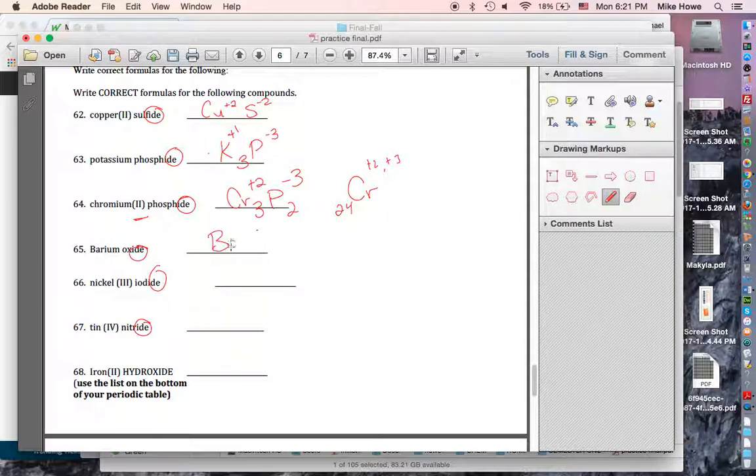Barium oxide, you've got barium is +2. You've got oxygen with 6 valence electrons, or -2, equal and opposite already, you're done.